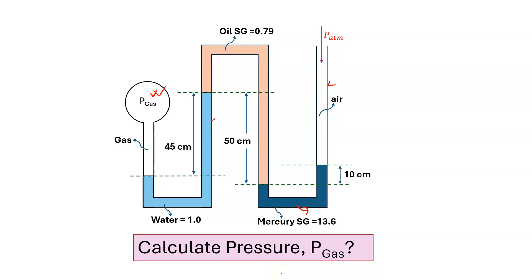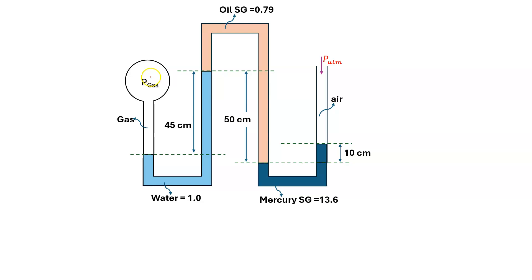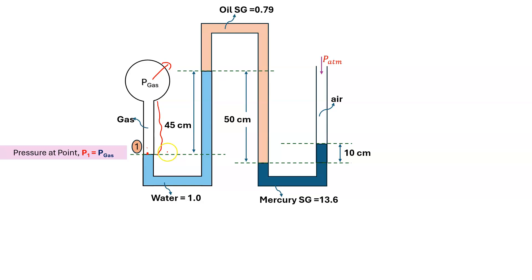We have to calculate what will be the pressure in the pipeline — that is, the value of P_gas. Due to the pressure of the gas, water is pushed down. At point 1, since gas density is very low, the pressure due to height is negligible, so pressure at point 1 is P_gas. Drawing a horizontal line from the two-liquid interface, the same fluid exists in the other limb, so pressure is the same. Therefore, pressure at point 2 is also P_gas.